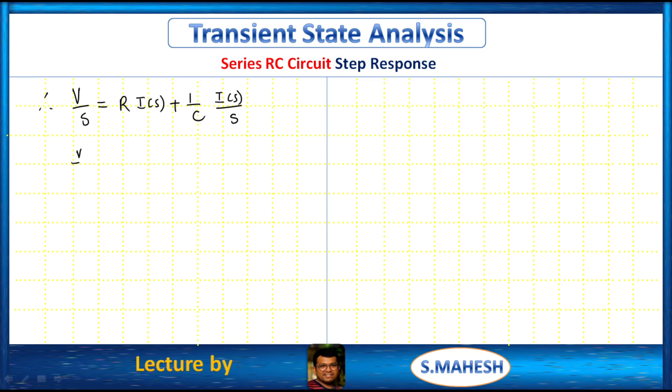So finally what we have, I of s gets common, R plus 1 by C of s. From this V is equals to I of s, R C of s plus 1 by C of s.